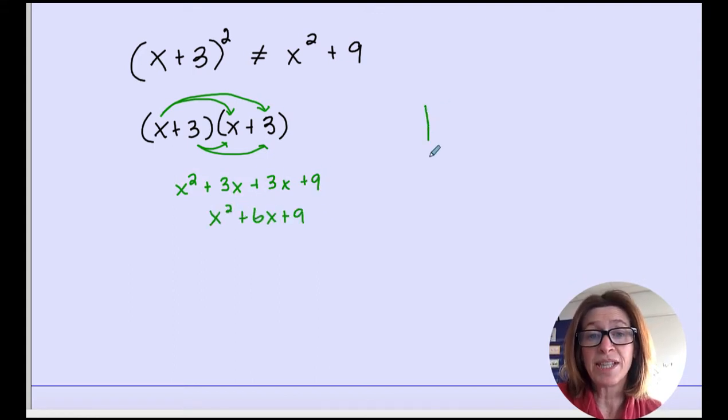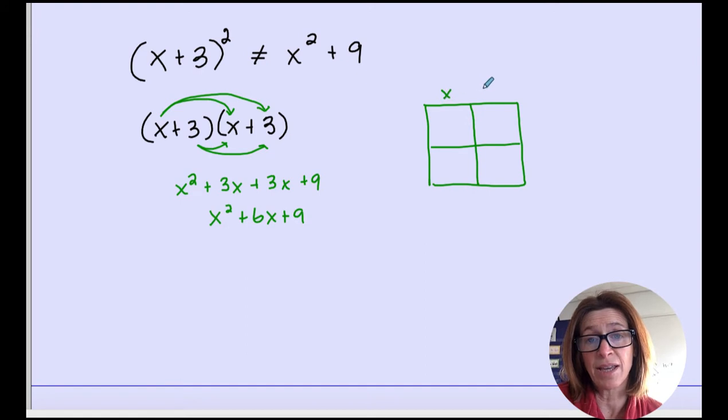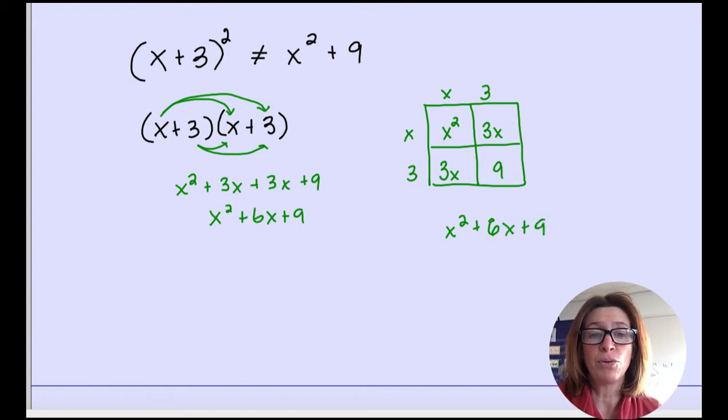You could use the area model and make a rectangle with sides x and 3, x and 3, and multiply. It's the same process, just visually. Then combine the like terms. Or we did review the pattern that occurs every single time.